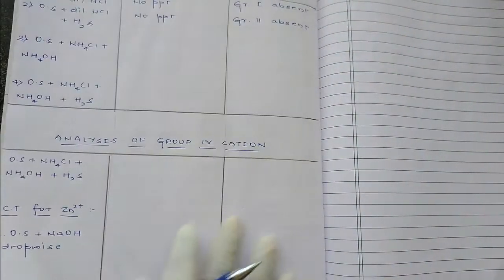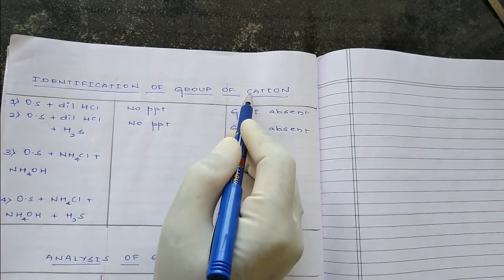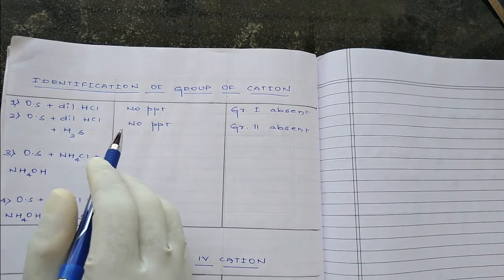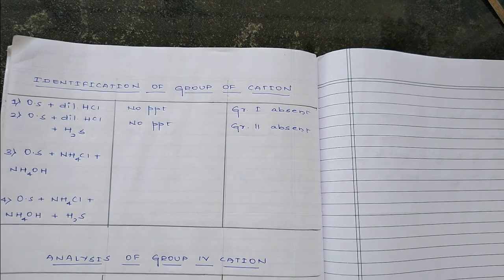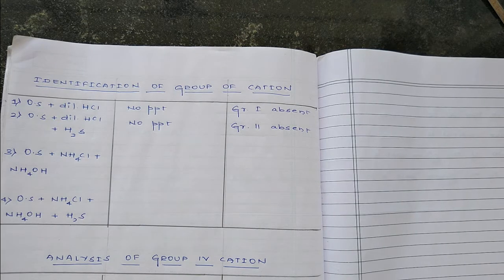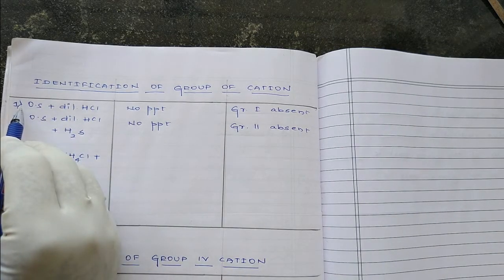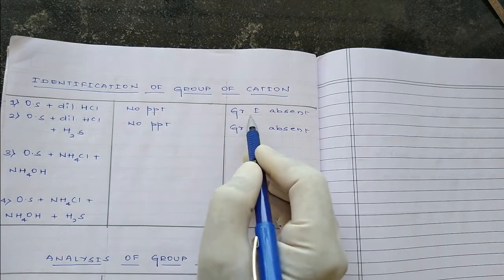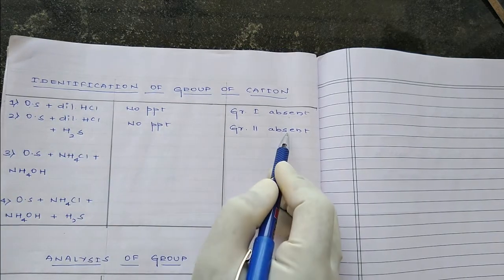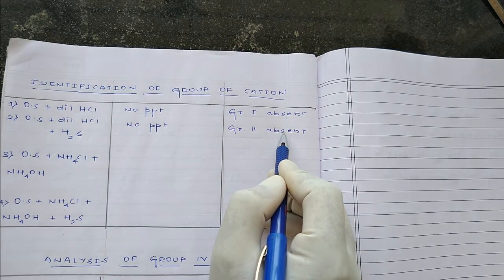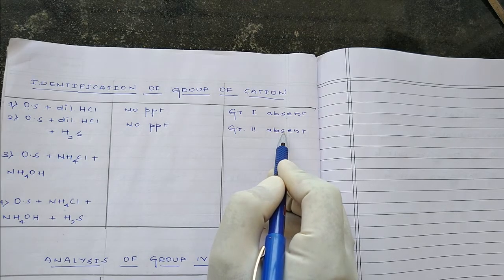After preparing the original solution, we go for identification of the group of cation — basic radical groups one and two. At the PU level, group one and group two will always be absent, so no need to conduct tests. Just note it down: O.S. plus dilute HCl — no precipitate — group one absent. O.S. plus dilute HCl plus hydrogen sulphide — no precipitate — group two absent. If zero group is absent, directly go for group three.